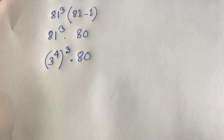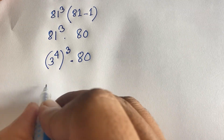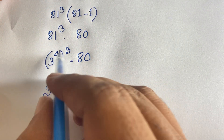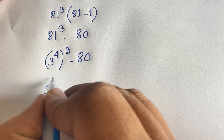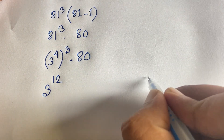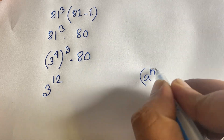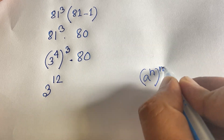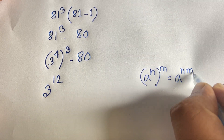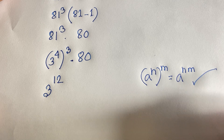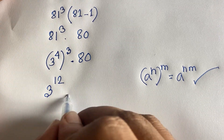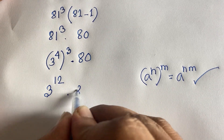We know the exponential law: (a to the power n) to the power m equals a to the power (n times m). So (3 to the power 4) to the power 3 gives 3 to the power 12. Therefore the expression becomes 3 to the power 12 times 80.